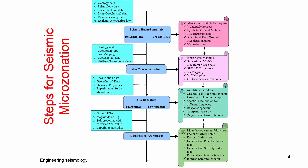Once seismic waves travel from the bedrock to the soil, the waves are modified based on the soil's static and dynamic properties. To capture that modification, you first characterize the site — what type of soil is present, what is its stiffness, Young's modulus. This site characterization study produces the stiffness average map, soil thickness map, rock depth, and 3D modeling data for the particular region.